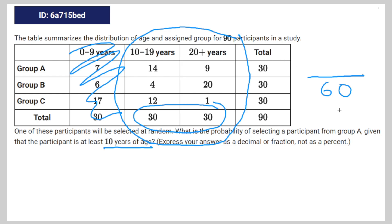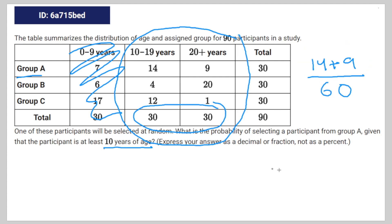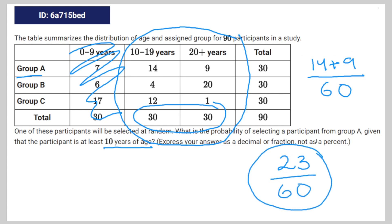And of those 60, only 14 plus 9 are in group A. Therefore, on the top of the probability, there's going to be 14 plus 9. And that is, of course, equal to 23 over 60. And that is the answer.